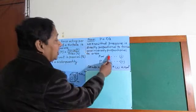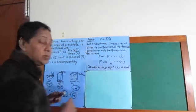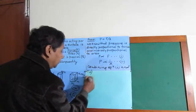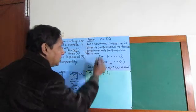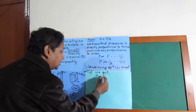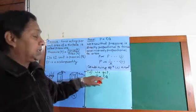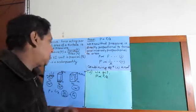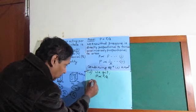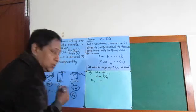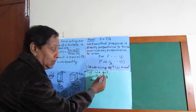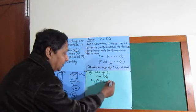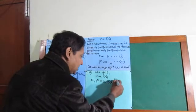In mathematical form: pressure is directly proportional to force — equation one; pressure is inversely proportional to area — equation two. Combining equations one and two: pressure is directly proportional to force and inversely proportional to area. When quantities are proportional to each other, there must be a constant between them. We convert the proportionality sign to an equals sign by introducing a constant k, giving us P equals k times F divided by A.